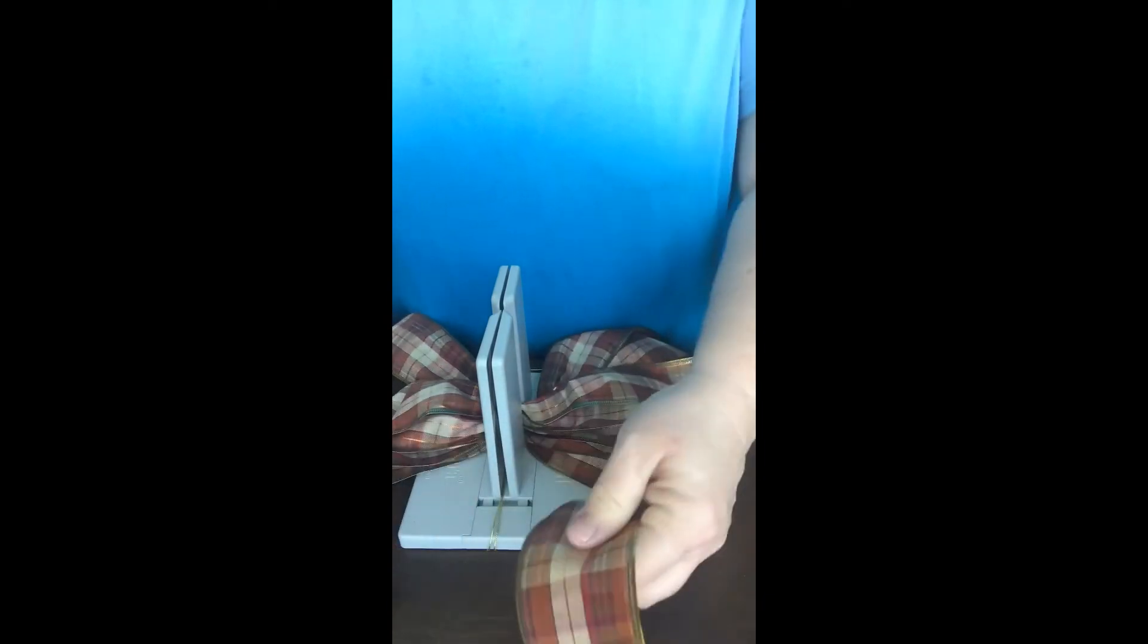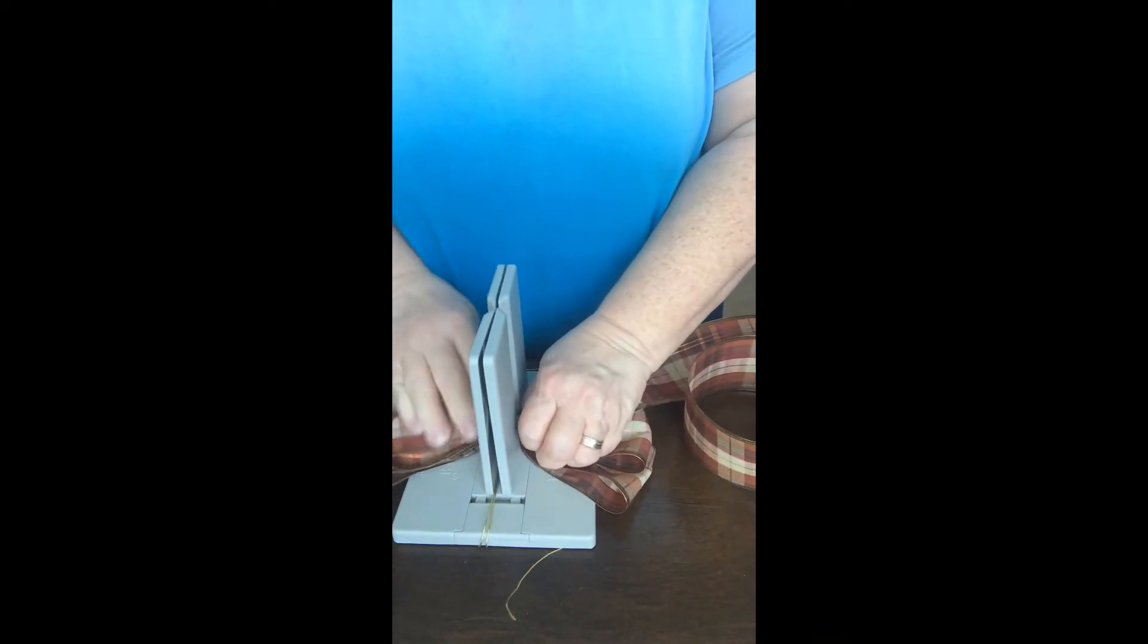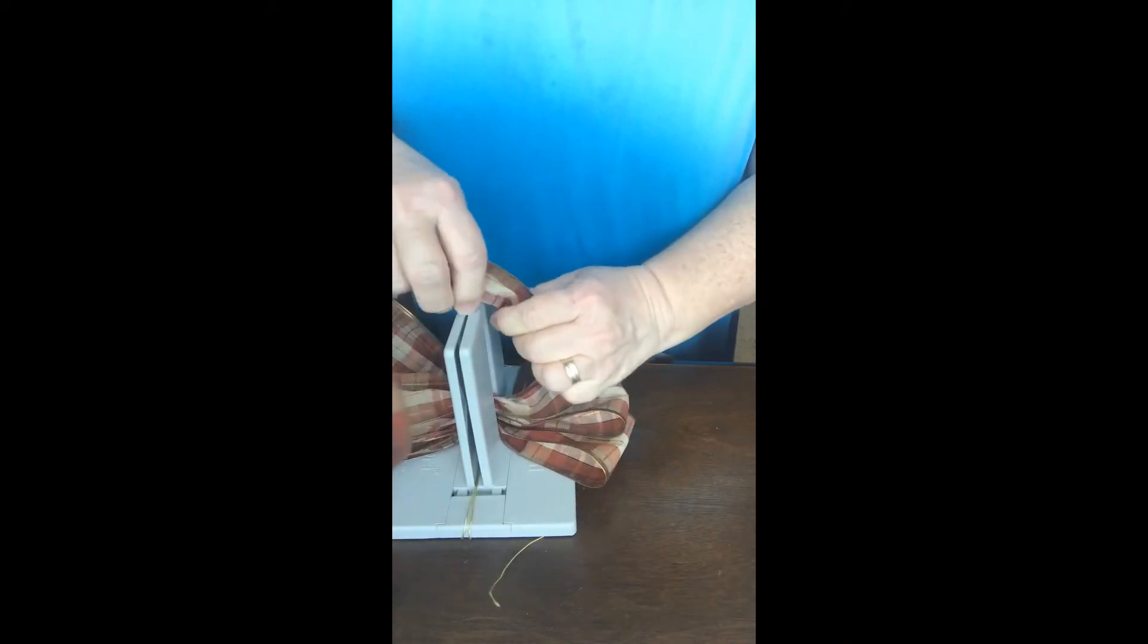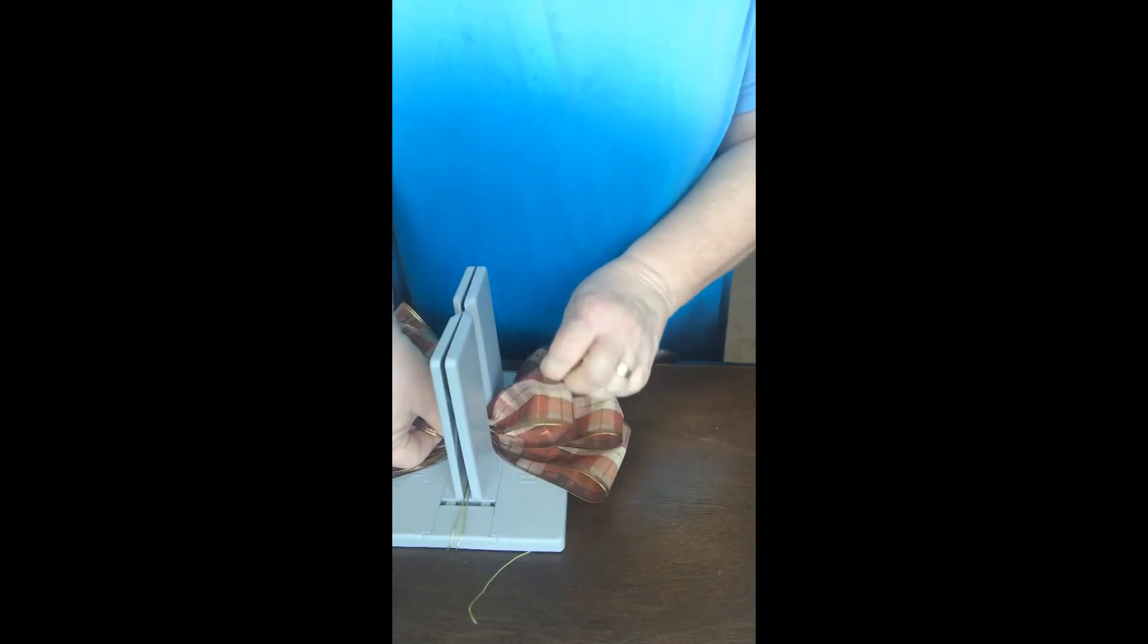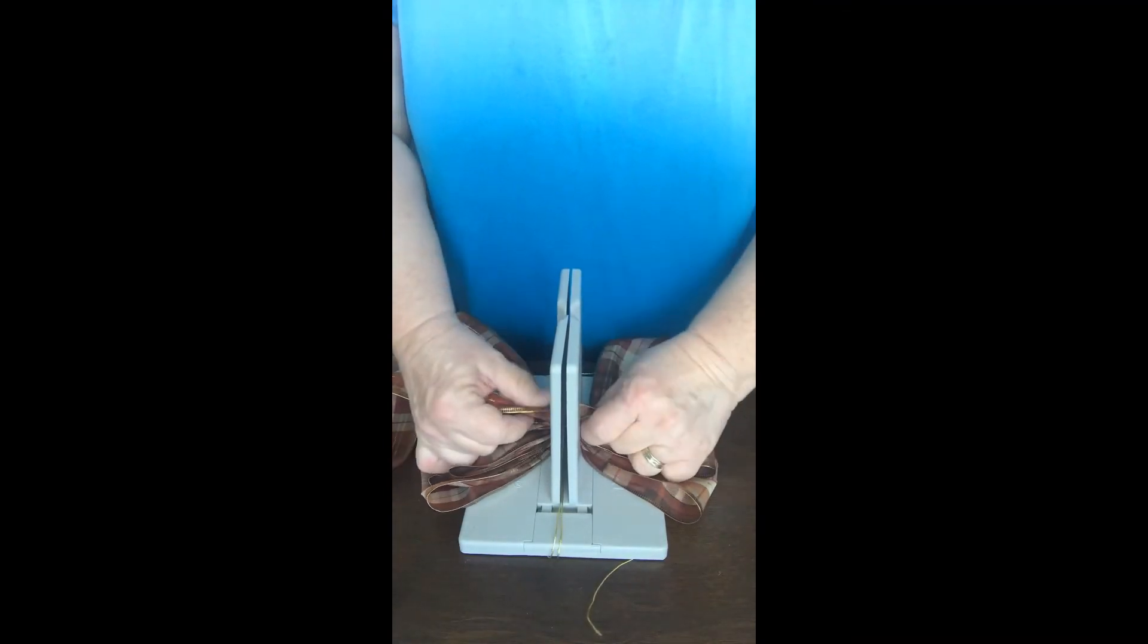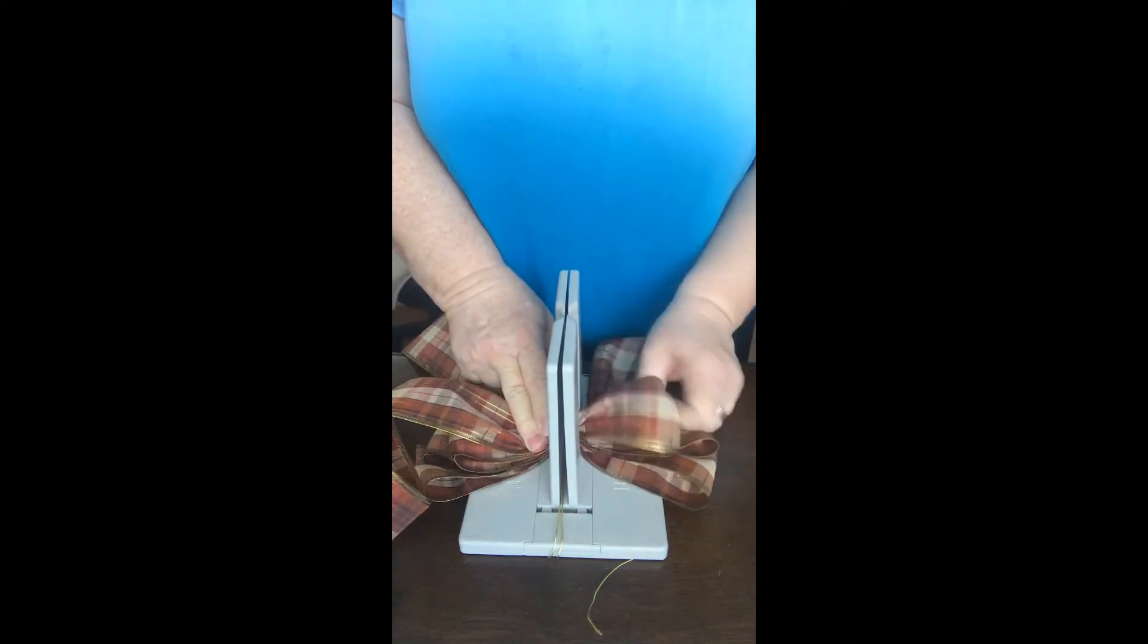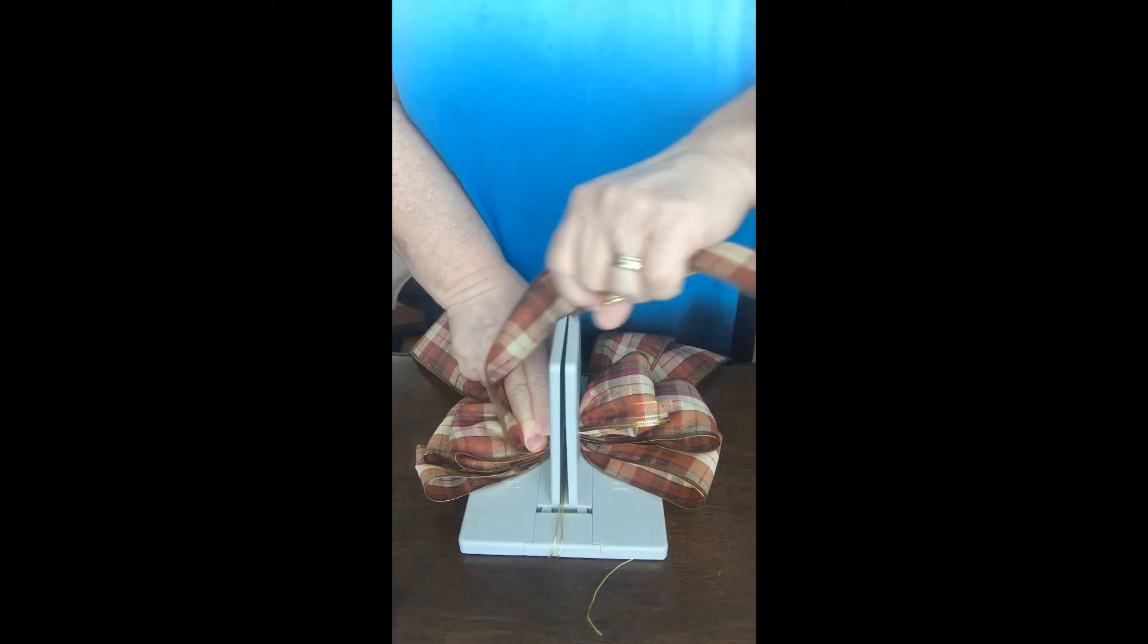I like to make each loop a little bit smaller than the one before it. Now, like I said, this ribbon came from the dollar store, so it's actually kind of a small roll. It doesn't have much on it. So this is not going to be a very big bow. But you can see how handy the Bowdabra is. It just gives you an extra set of hands.